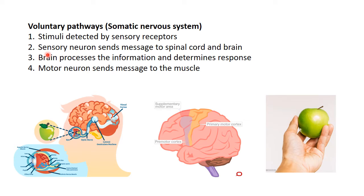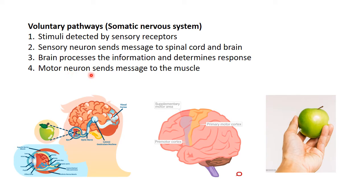Then those sensory receptors send a message to our brain. This happens along sensory nerves that carry the message to our spinal cord and brain. The third step is the brain processes the information and decides how it's going to respond. The fourth step is the brain sends a message back to the muscle via a motor neuron.